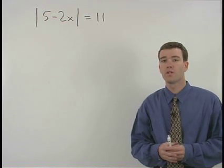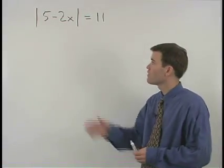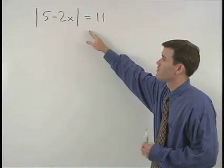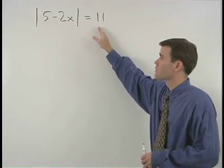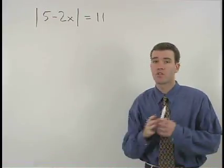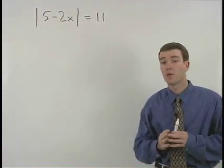Using the rule we learned in the previous example, we can solve the equation the absolute value of 5 minus 2x equals 11 by first splitting things up into two separate equations.